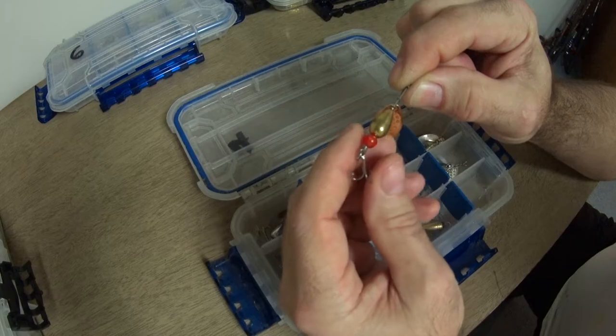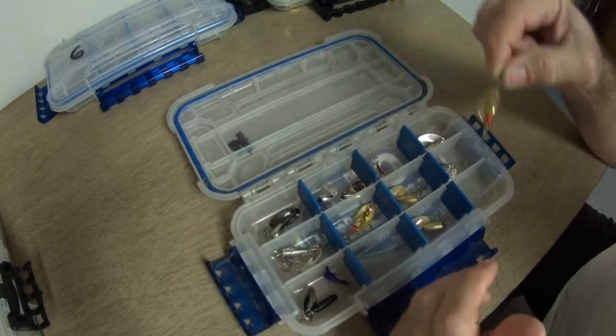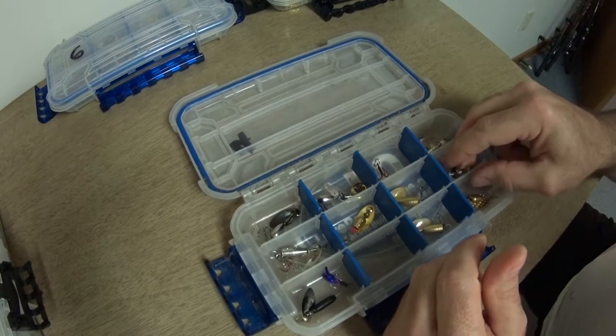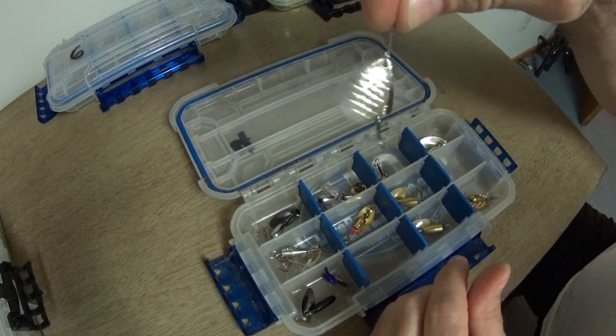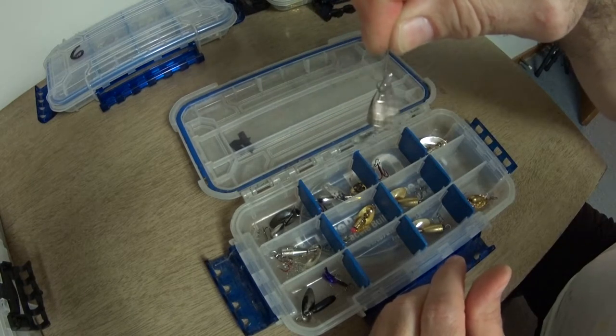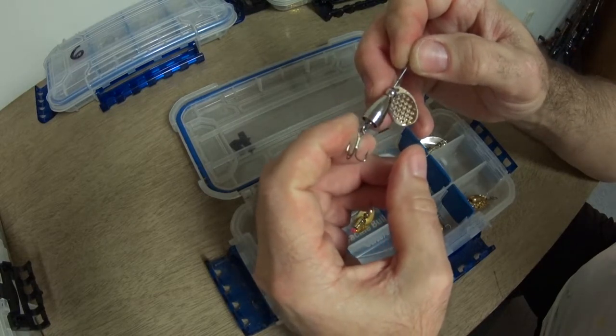I do hit all of my hooks with a file before completing the lure. And I'll occasionally, throughout the year, usually before I go out on outings, I'll hit them again with the file and get the hooks all razor sharp. These are all very, very sharp.